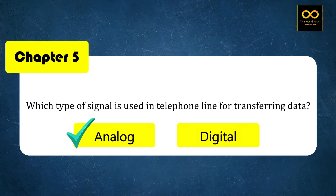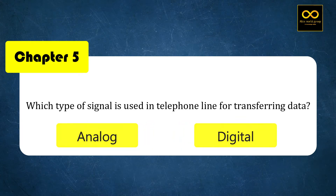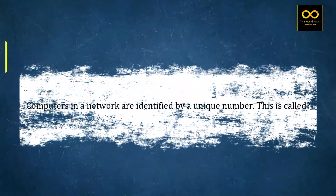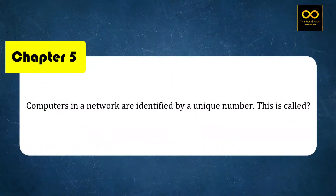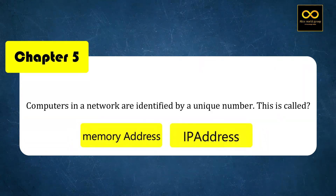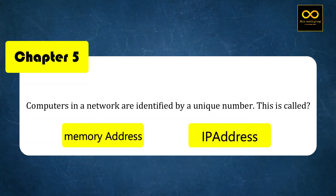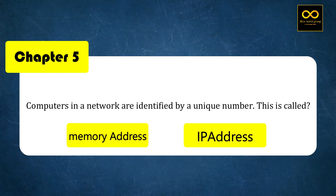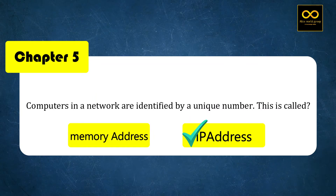Computers in a network are identified by a unique number. This is called — what is it? Computer networks are identified by a unique number. The right answer is IP address, as opposed to memory address.